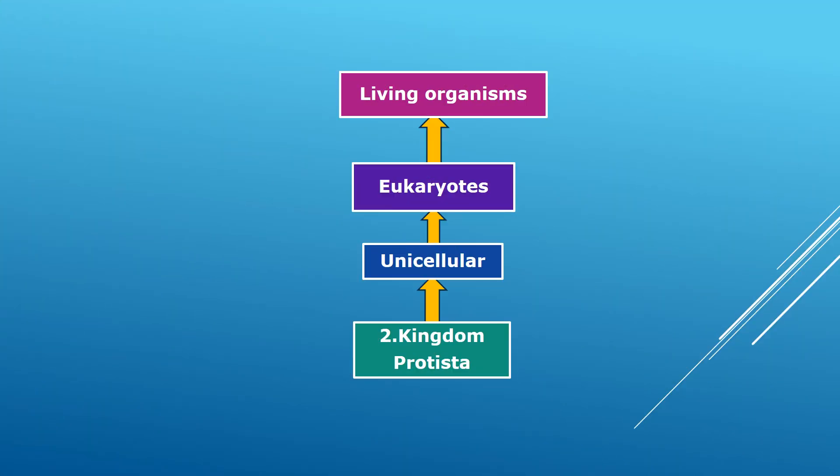In short, kingdom Protista is a unicellular eukaryotic living organism — unicellular means it contains only one cell, and eukaryotic means it has a cell with a nucleus with bound cell organelles and has a complex structure.